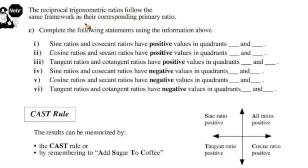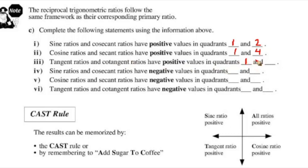The reciprocal trigonometric ratios follow the same sign framework as their corresponding primary ratio — if sine is negative, then cosecant is also negative. Completing the statements: sine and cosecant are positive in quadrants one and two, where y is positive. Cosine and secant are positive in quadrants one and four, where x is positive. Tangent and cotangent are positive in quadrants one and three, where y and x share the same sign.